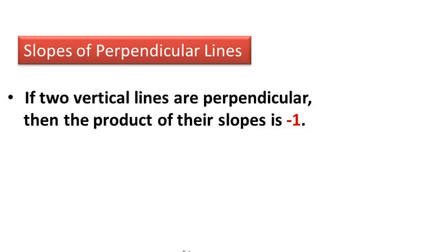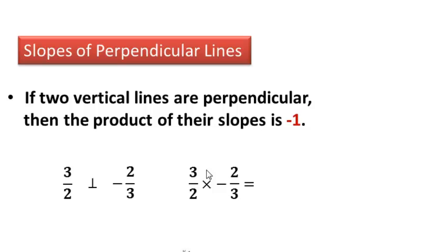Now let's talk about slopes of perpendicular lines. If two lines are perpendicular, the product of their slopes is negative one — and remember, product means multiplication. If a line has a slope of three over two, then a line perpendicular to it has the opposite reciprocal slope, which is negative two over three. Multiplying three over two by negative two over three gives negative six over six, which simplifies to negative one. So perpendicular slopes always multiply to negative one.